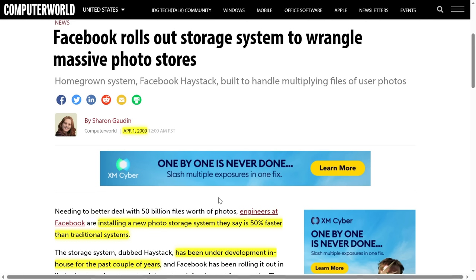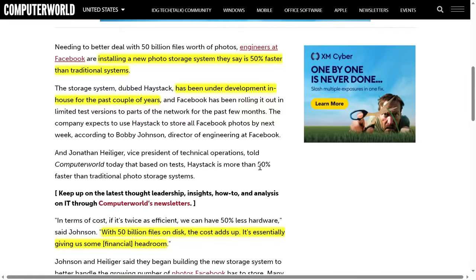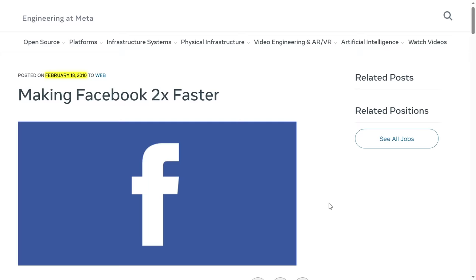In 2009, Facebook announced the rollout of a new storage system. The entire rationale for this system was a performance improvement. It took, quote, a couple years for them to develop this system. And the reason they gave for spending all this time and effort was that it allowed them to do the same amount of work with 50% less hardware.